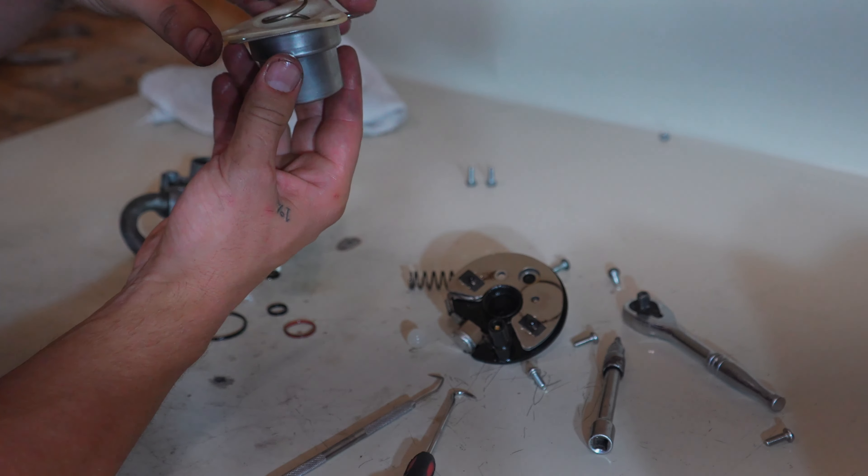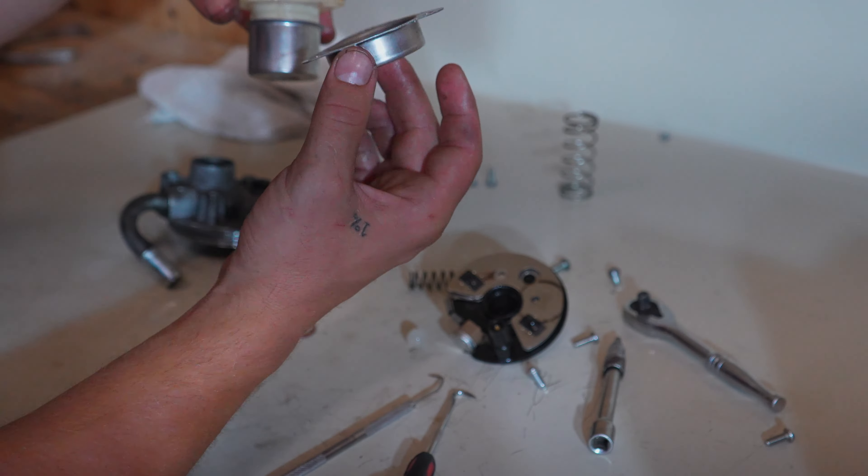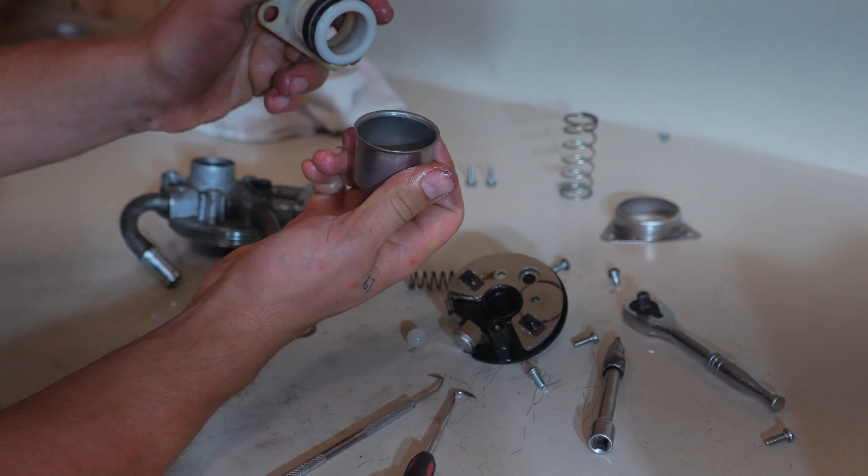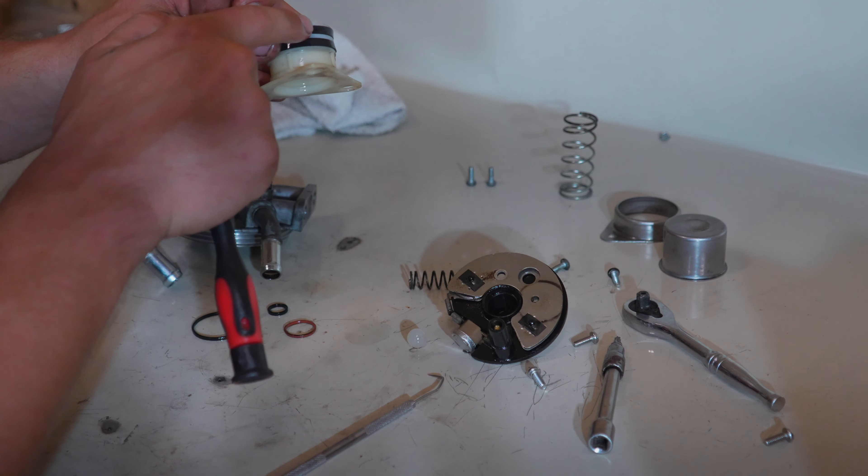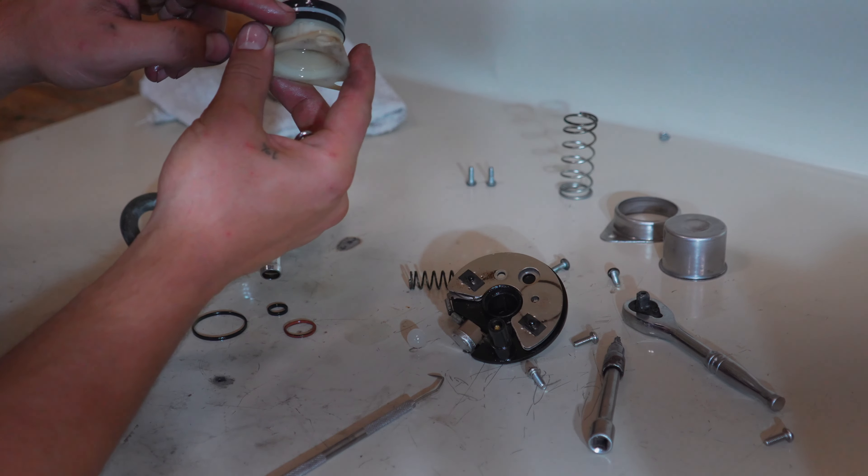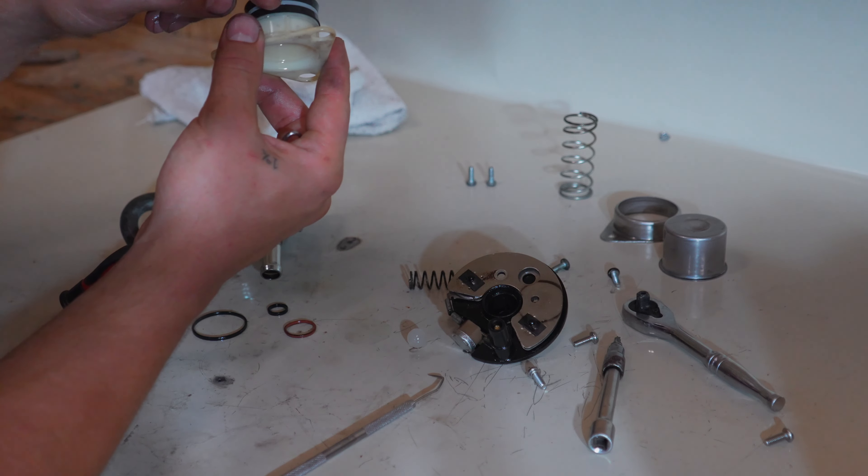Then we're going to disassemble our priming pump. Take the spring out, take this hold down off of it, and then pull this apart. Here, you'll see that you have two large seals on here. The top seal has the larger flat portion facing up, and the bottom seal has the larger flat portion facing down.